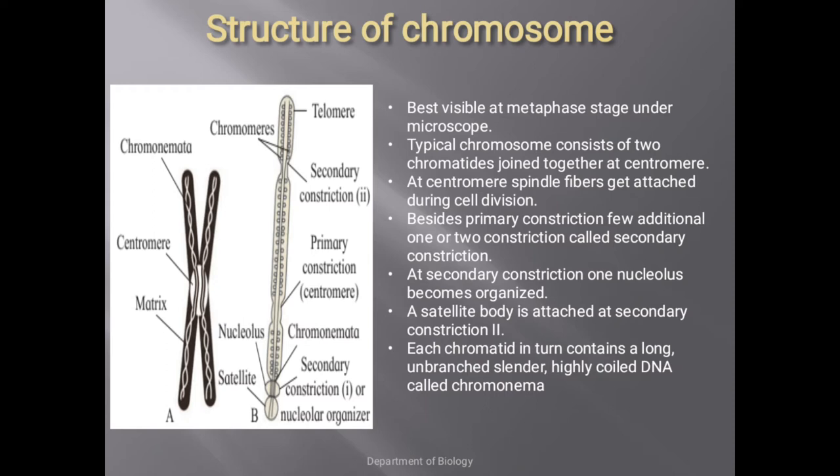Beyond the secondary constriction, an additional structure is present known as a satellite. Chromosomes that contain satellites are called SAT chromosomes. Chromosome numbers 13, 14, 15, 21, and 22 are known as SAT chromosomes. Each chromatid in turn contains a long, unbranched, slender, and highly coiled DNA called chromonema or chromonemata. The surface of the chromosome bears a small swelling called chromomere.